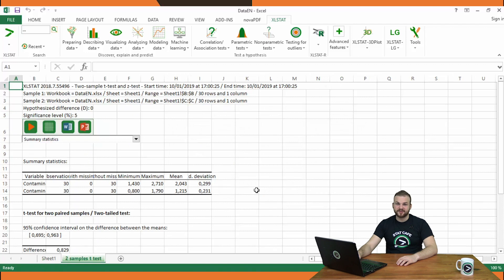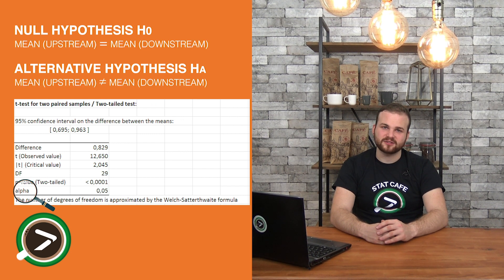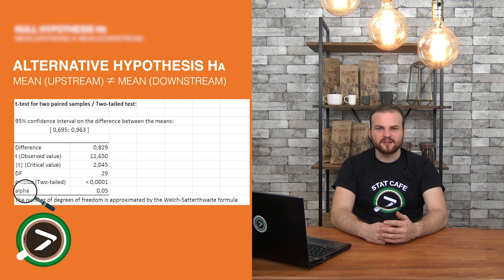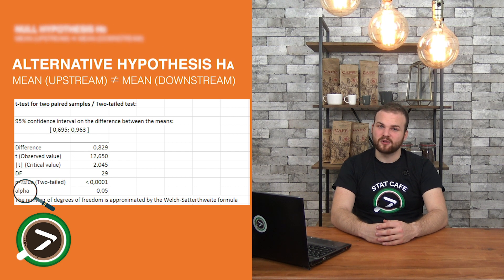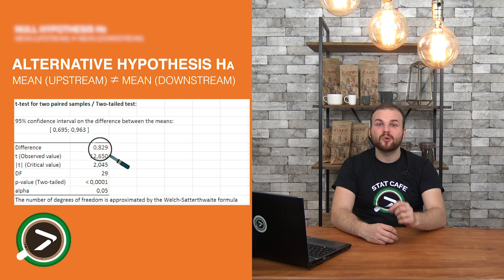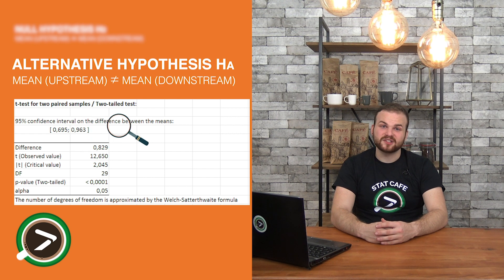The results appear in a new Excel spreadsheet. The p-value is extremely low compared to the 0.05 alpha risk threshold. We may thus reject H0 and accept HA while taking a very weak risk of being wrong. It is interesting to note the estimation of the difference between the two means: 0.829. The confidence interval around the estimate evaluates its precision. In our case, the confidence interval is quite narrow, which reflects good accuracy.